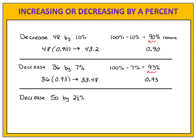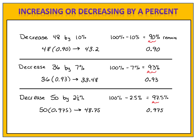Here's one last example: can you decrease 50 by 2.5%? We have 100% minus 2.5%, so 97.5% is what remains. Convert that to a decimal: 0.975 is our factor or multiplier. 50 times 0.975 gives us the result of 48.75. If we decrease 50 by 2.5%, what remains is 48.75.